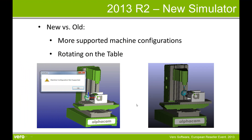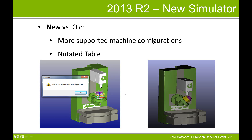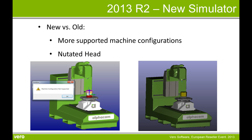To emphasise, we do now support more machine configurations, including rotating on the table. If we had tried to run this machine configuration in the previous version, we would have got an error message. The same would have applied if we tried to run a nutated table or a nutated head.